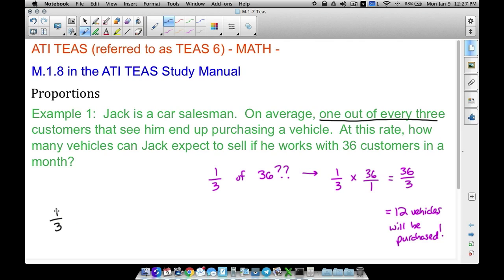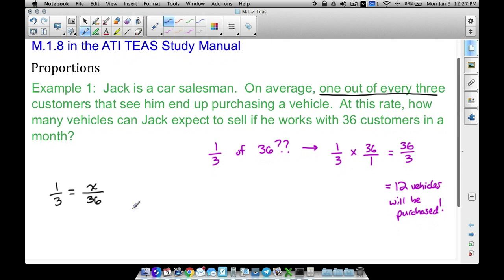Well how many are going to buy, how many vehicles will he sell out of 36 people that he sees? Now this is a proportion. And what you want to do, the quickest way to solve a proportion is to cross multiply and divide. So cross multiply this way, we get 36. Cross multiply this way, we get 3x.